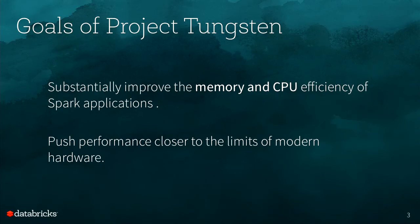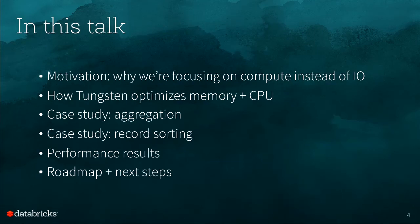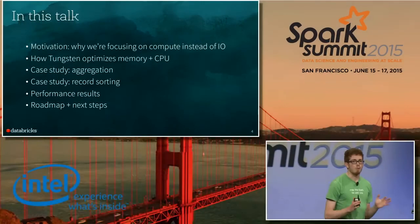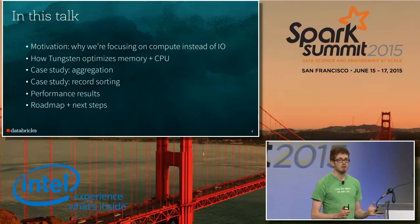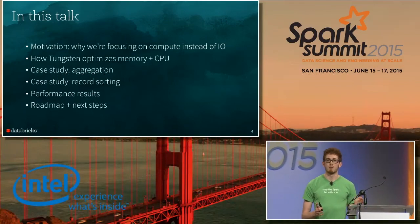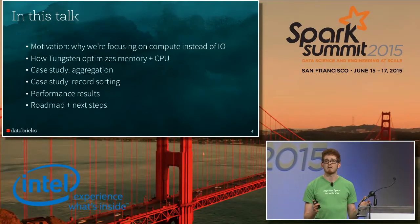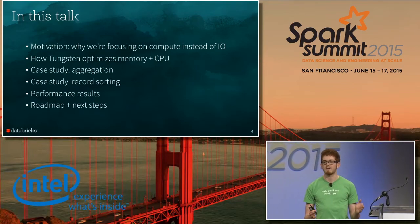The goals of Project Tungsten are all about memory and CPU — improving the efficiency of Spark applications and pushing the limits of the underlying hardware. Over the course of this talk, I'm going to start by providing motivation for why we're focusing on CPU and memory optimizations as opposed to network and disk. Once we've identified why CPU is sometimes the bottleneck for Spark workloads, we're going to take a look at the building blocks of how Tungsten addresses these bottlenecks.